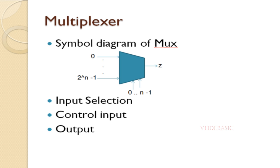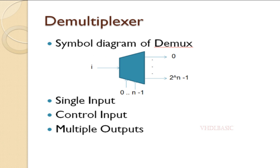Now we need to know about the demultiplexer. This is the demultiplexer symbol diagram. If you see, there is one single bit of input, N number of selection bits, and 2^N outputs. With respect to the select lines, the input will be assigned to a particular output pin.